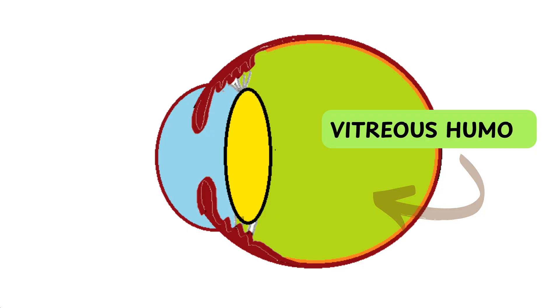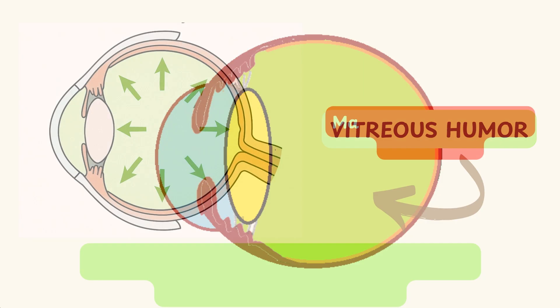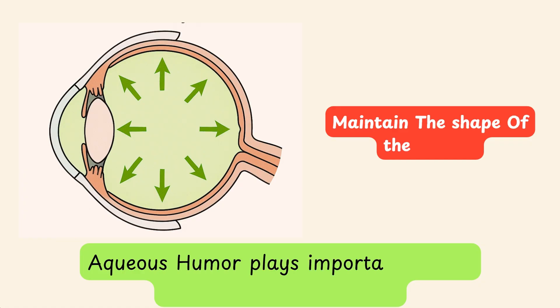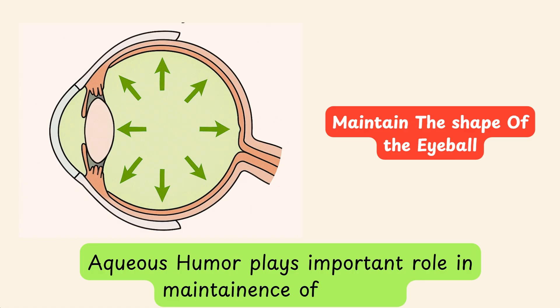Posterior to the lens is a gel-like substance known as the vitreous humor. These two humors help maintain the shape of the eyeball, and the aqueous humor plays a key role in regulating the intraocular pressure.